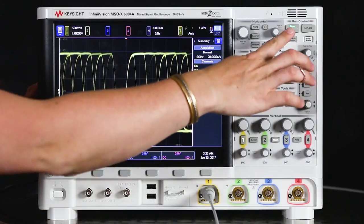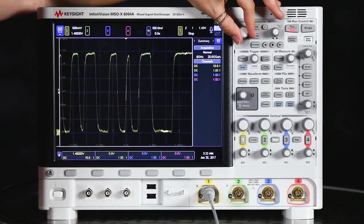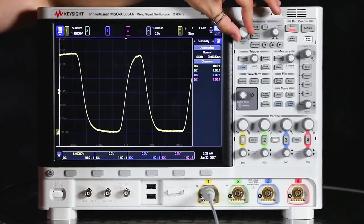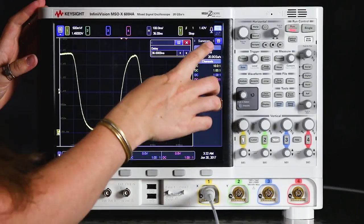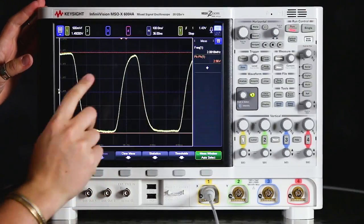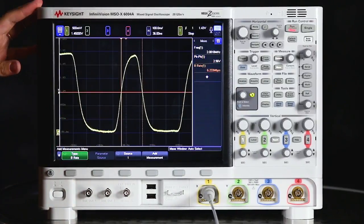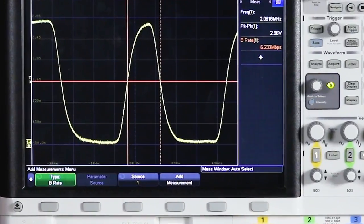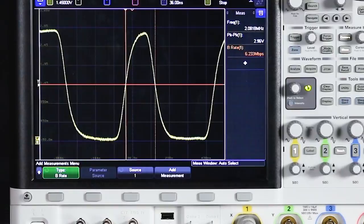And to figure out what the bitrate of the signal is, I want to stop the acquisition. Then I want to zoom out and find one of the smallest pulses I can see in the signal and center that on screen. Now I can go into my measurements menu and add a measurement. We're going to add a bitrate measurement. Now I can see a rough estimate of what my ideal bitrate should be, around 6.2 megabits per second.